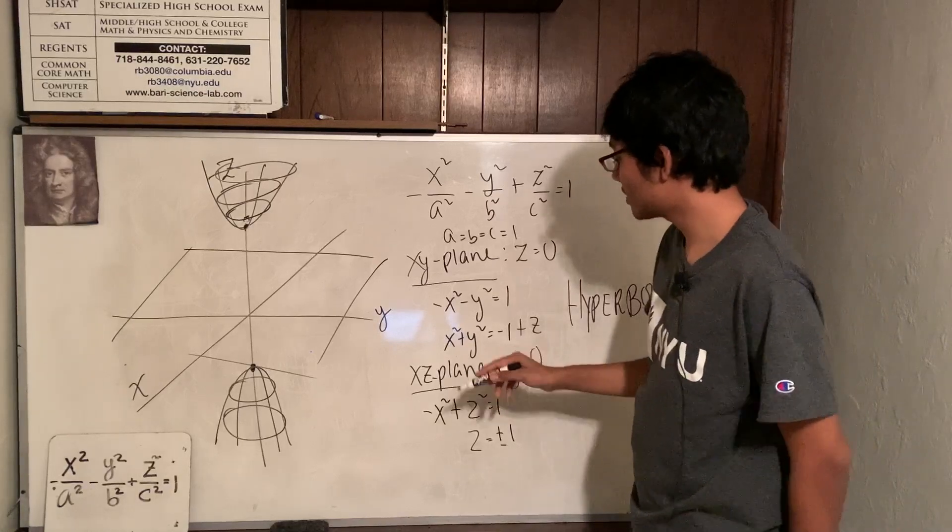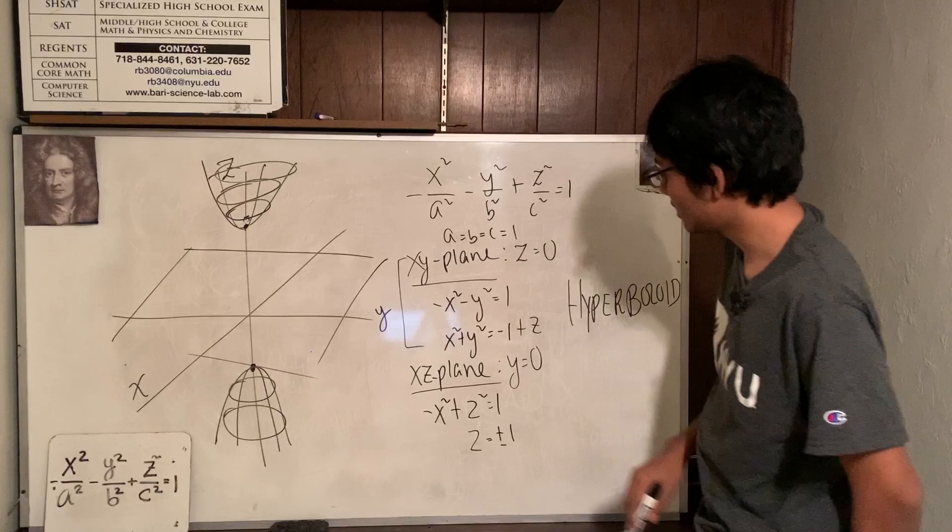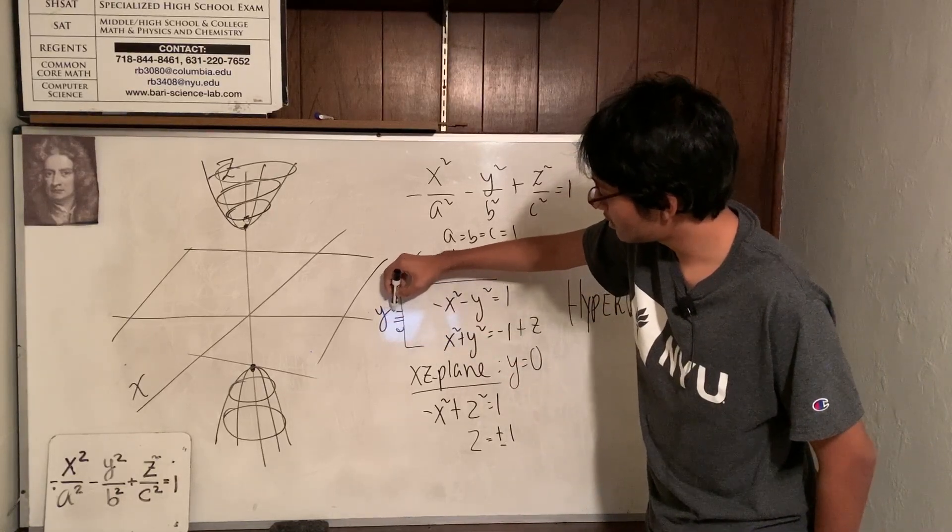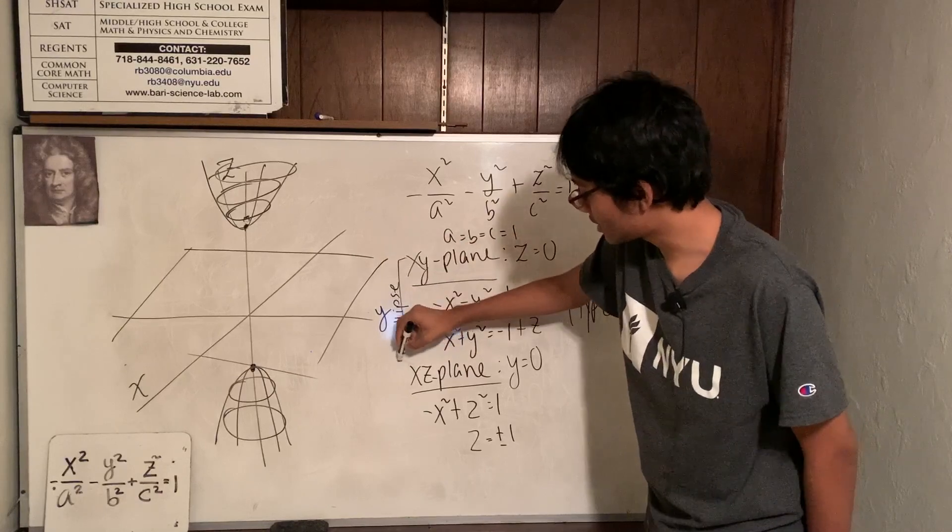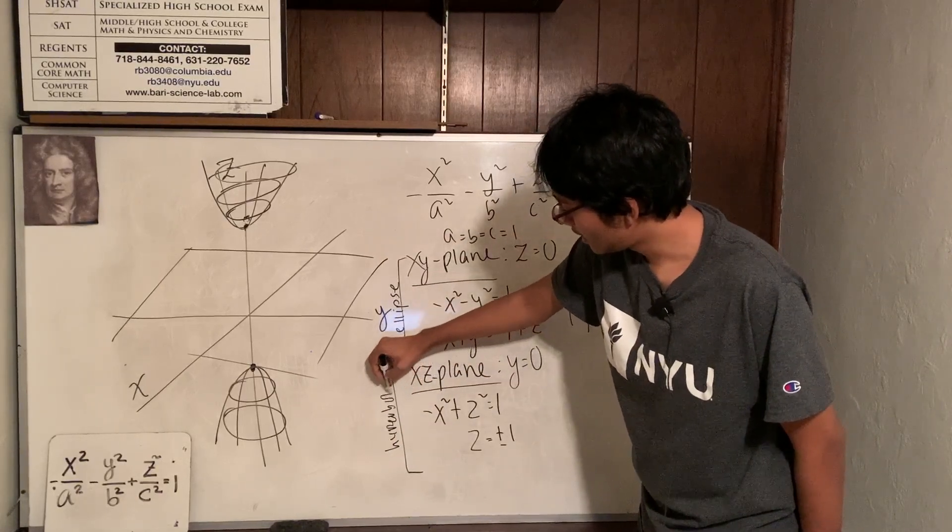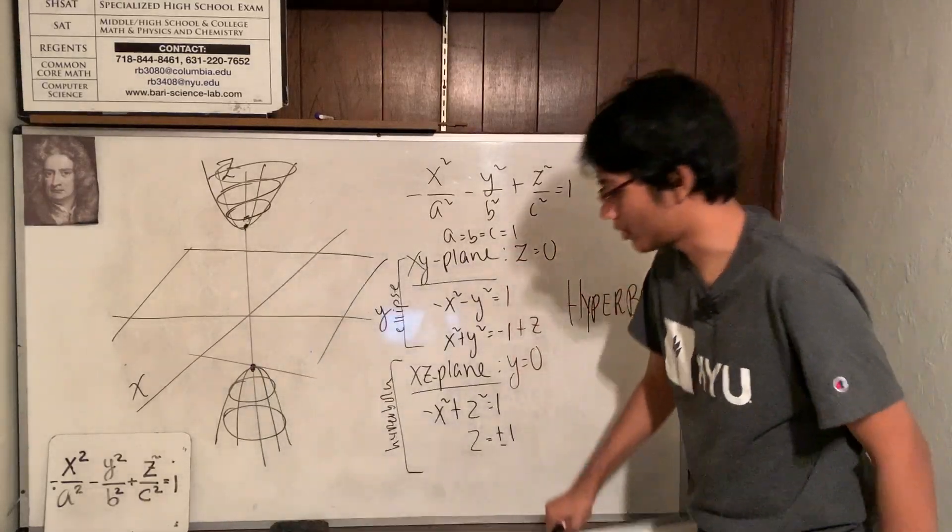We call it a hyperboloid because, well, guess what? You got two hyperbolas. The cross section on the x, y plane. That's an ellipse. Cross section on the x, z plane. That's a hyperbola. And cross section on the y, z plane. Well, this is also hyperbola. So, you got a lot of hyperbolas. That's why we call it a hyperboloid.